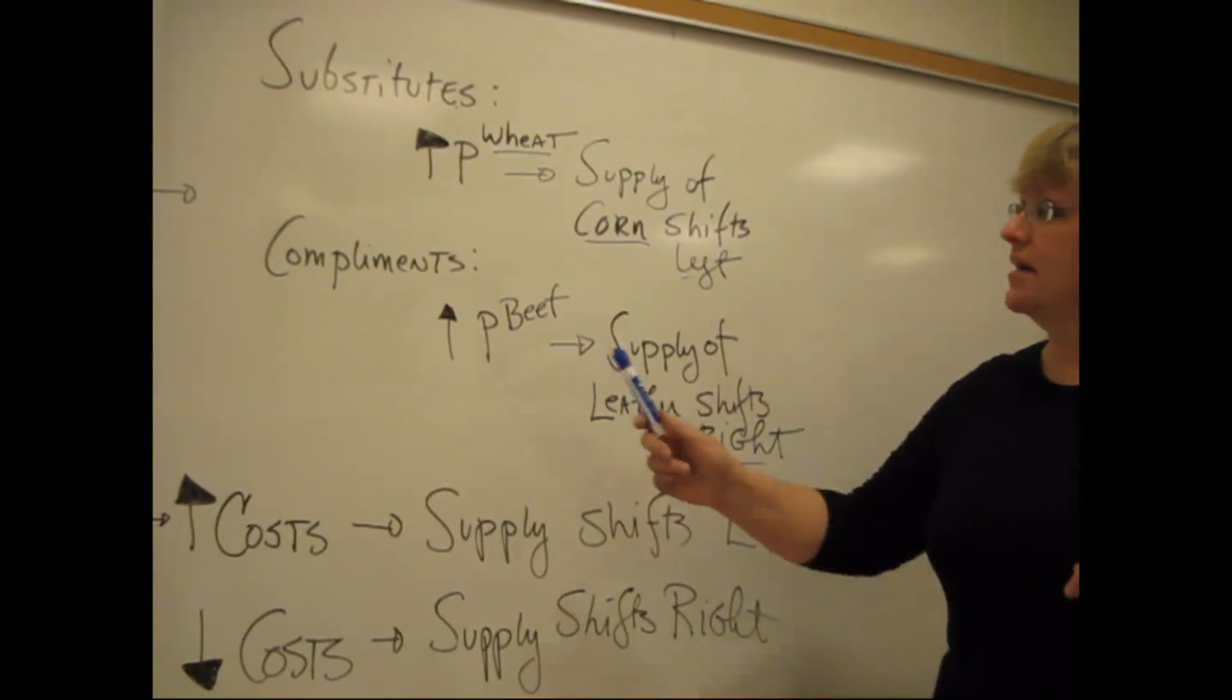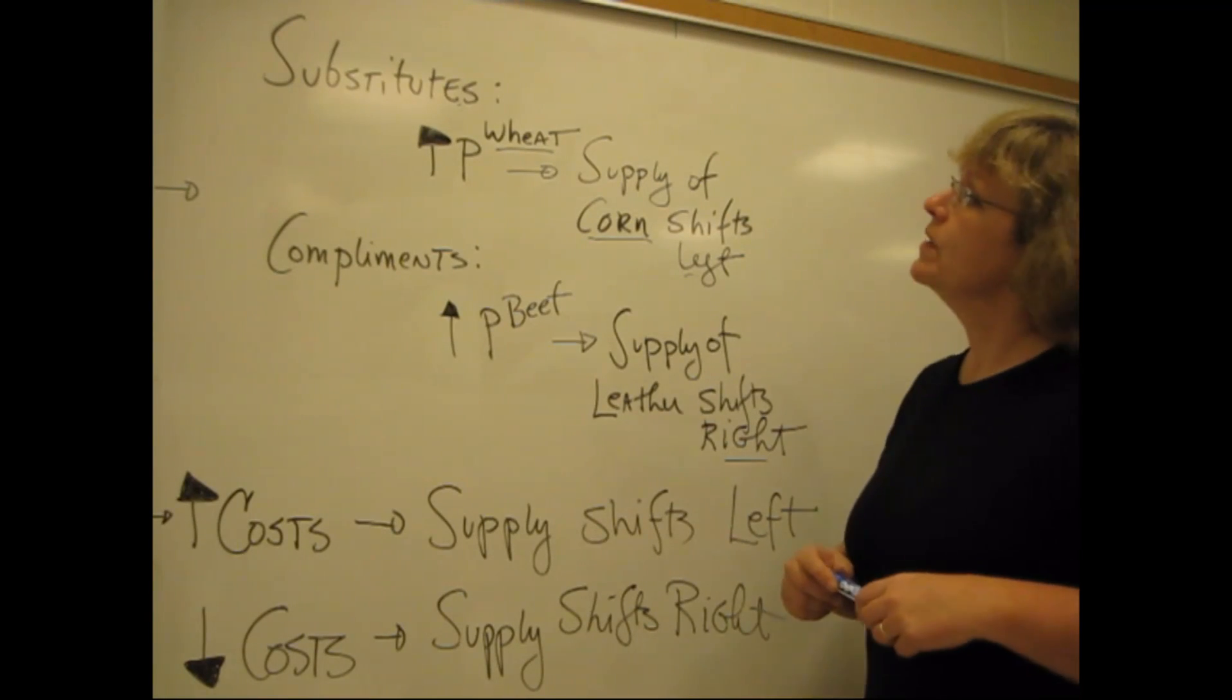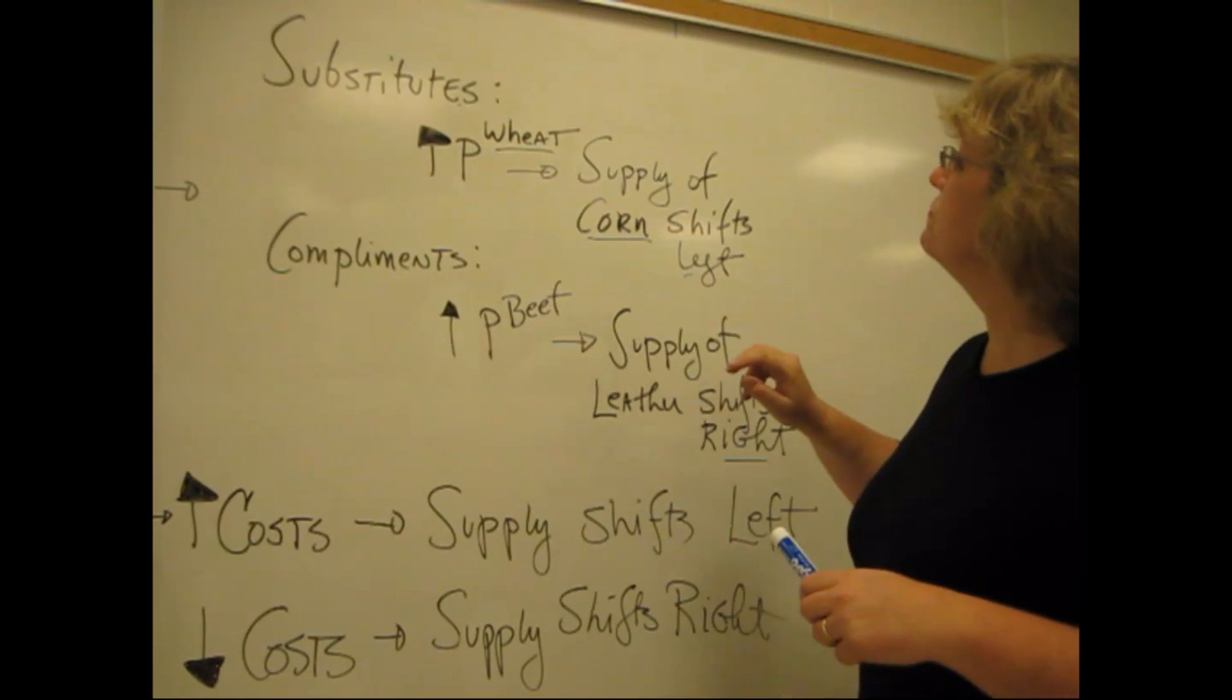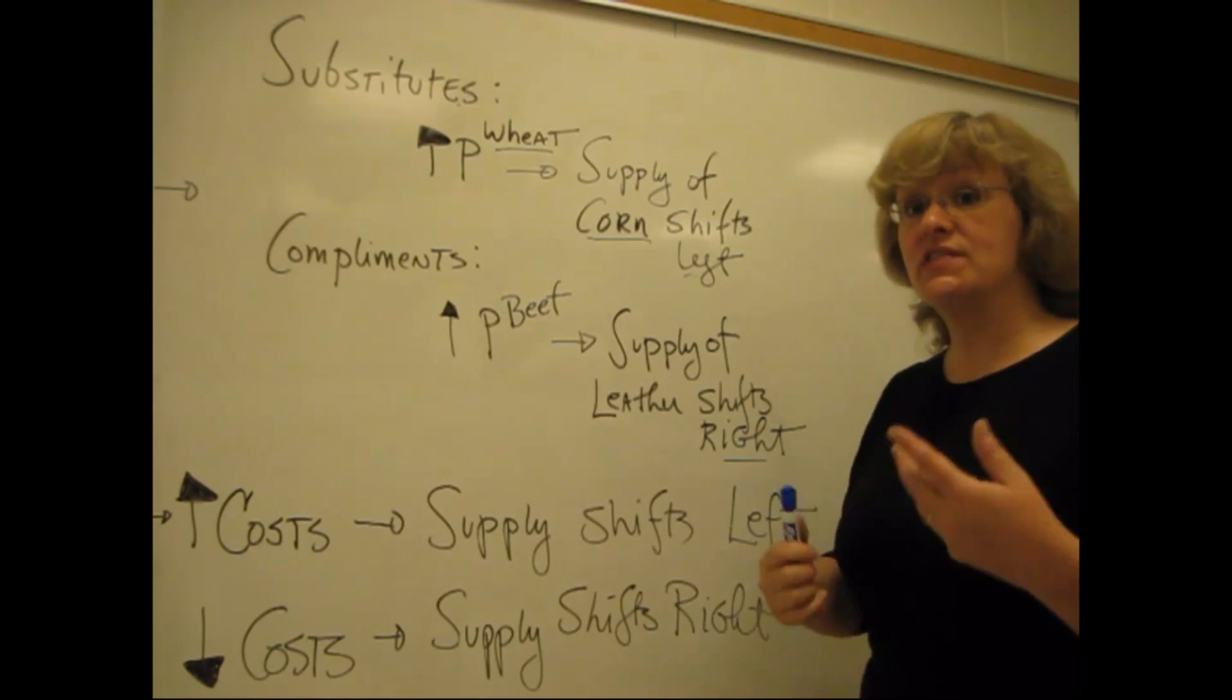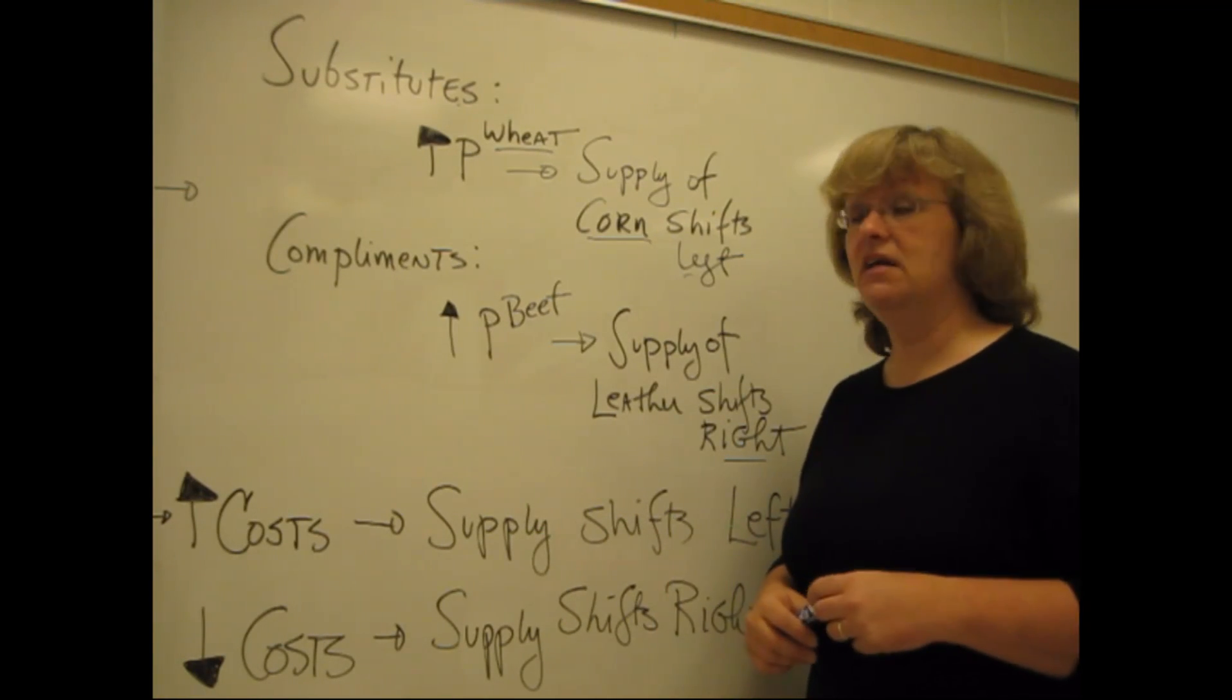Substitutes in supply and complements in supply, it's going to sound kind of familiar, just like with the demand curve. Now, in my example here for substitutes, I've got price of wheat and the supply of corn, because farmers can decide how much wheat, how much corn they're going to supply in a given growing season.